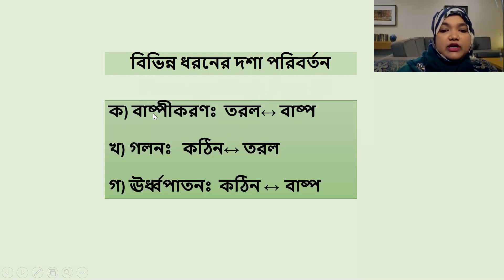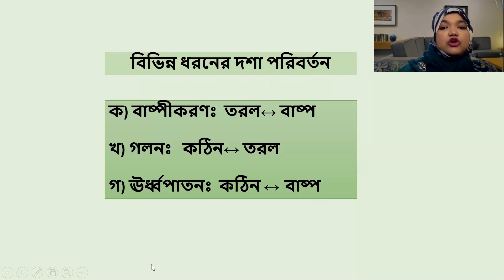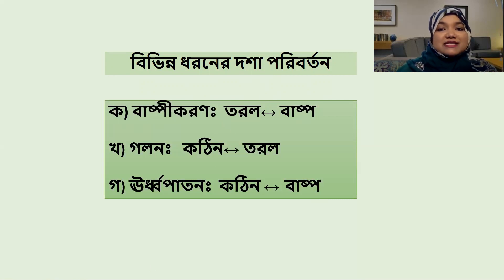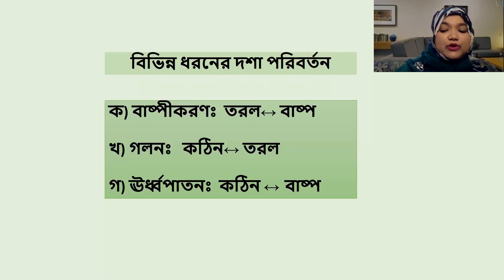જদি বাষ্পীকরণ হয় আবার কঠিন থেকে যখন সমাবস্থায় থাকে তখন গলন সংগঠিত হয় এবং কঠিন বাষ্প যদি সমাবস্থাকে তাহলে ঊর্ধ্বপাতন সংগঠিত হয়। এখন আমরা ক্লসিয়াস ক্লাপেরঁ সমীকরণটি দেখে নিতে হবে। (If evaporation occurs, or when solid and vapor are in equilibrium, sublimation occurs. Now we need to look at the Clausius-Clapeyron equation.)